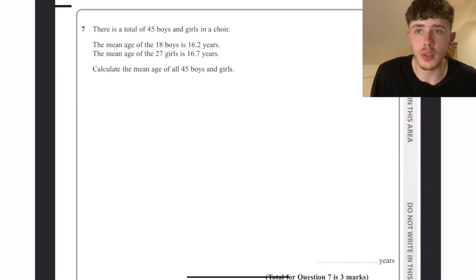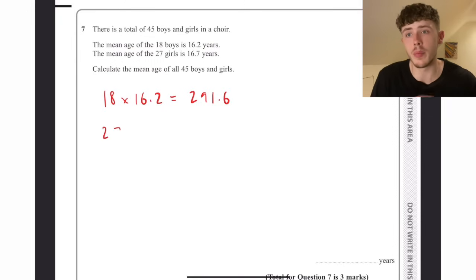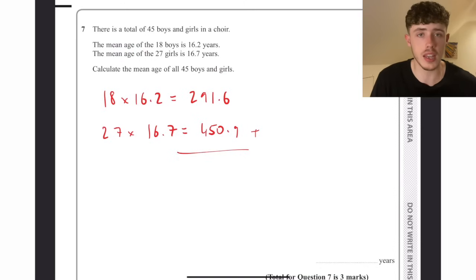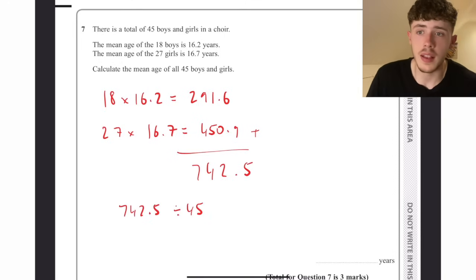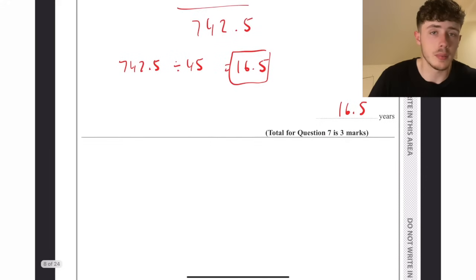Question seven. 45 boys and girls, we're told the mean of both the boys and the girls. The trick here is we want to do the mean but in reverse. We multiply the numbers together to get the sum of the boys' ages, so 291.6. Do the same for the girls, add them together to get 742.5 using our calculator. Then the mean is the sum divided by how many, so 45, and that comes to 16.5 years, which fits nicely between the 16.2 and 16.7.